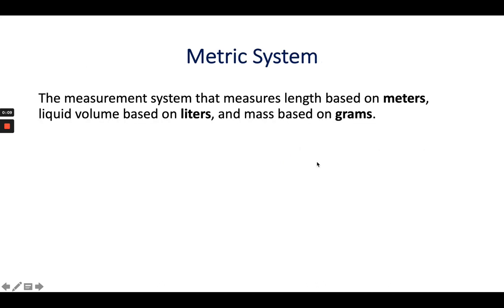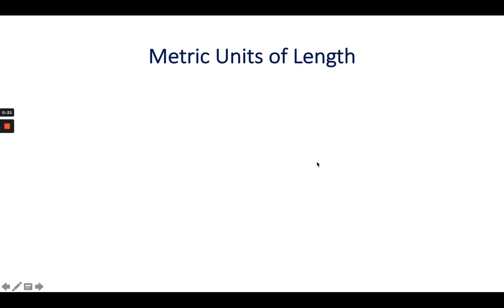The metric system is a measurement system that measures length based on meters, liquid volume based on liters, and mass based on grams. Mass is kind of how much something weighs based on grams.